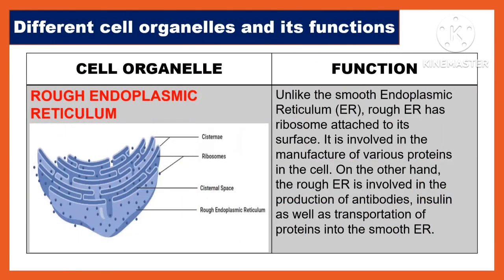Another cell organelle is the rough endoplasmic reticulum. Unlike the smooth endoplasmic reticulum, the rough ER has ribosomes attached to its surface. It is involved in the manufacture of various proteins in the cell. The rough ER is also involved in the production of antibodies, insulin, as well as the transportation of proteins into the smooth endoplasmic reticulum.